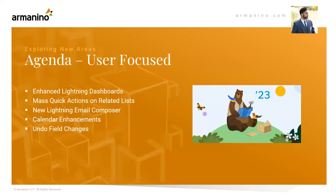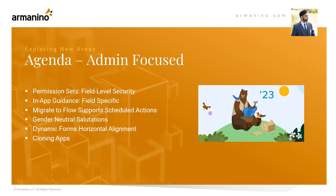Moving forward, we are going to have two different focuses. The first focus is the user-focused features in the Summer release: enhanced Lightning dashboards, mass quick actions on related lists, the new Lightning email composer, calendar enhancements, and the undo field changes feature. Next will be the admin-focused features: permission sets field-level security, in-app guidance field-specific, migrate to flow supports scheduled actions, gender-neutral salutations, dynamic forms horizontal alignment, and cloning apps.